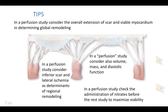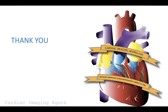Tips: You need to consider the overall extension of scar and viable myocardium for determining global remodeling. In a perfusion study, consider inferior scar and lateral ischemia as determinants of regional remodeling for the presence of mitral regurgitation. Consider the volume, mass, and diastolic function. And if you are in the presence of previous myocardial infarction, please be sure that nitrates are administered before the rest study in order to maximize the extension of viability. Hoping that this could be of help — thank you very much for your attention.